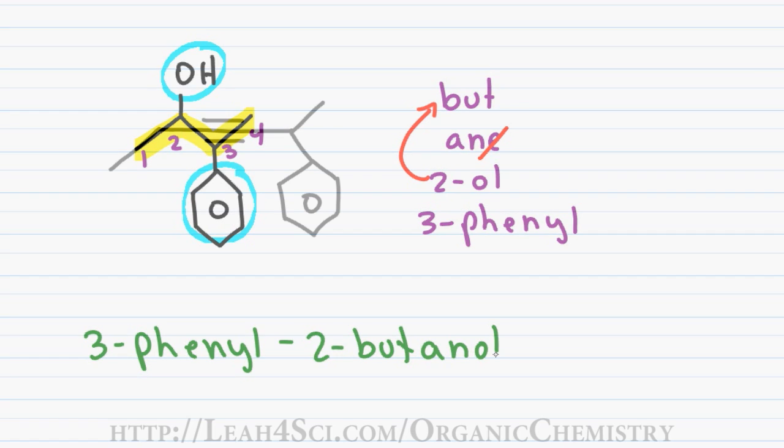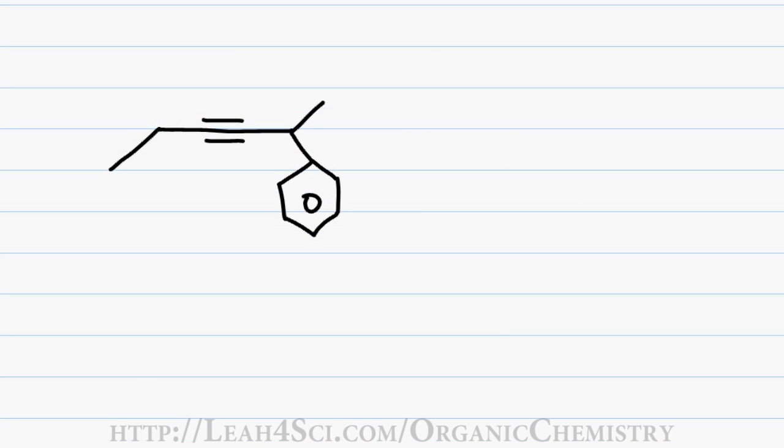In this example, we have both the triple bond and a benzene ring on my parent chain. Again I start by identifying and highlighting the parent chain and then number it from the direction that gives me the total lowest set of numbers. If I number from the left, I hit the triple bond on number three. If I number from the right, I hit benzene on number two and so I number from the right for a total of six carbons and a first name of hex.